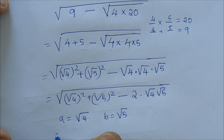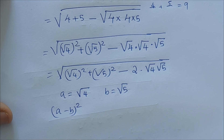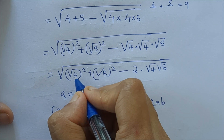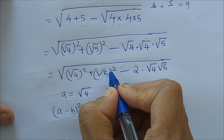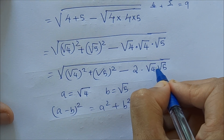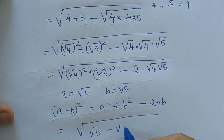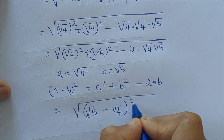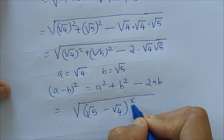This is in the form (a minus b) all squared, which equals a squared plus b squared minus 2ab. Here root 4 is a and root 5 is b, so this is in the form (a minus b) all squared. We can rewrite this as root of (root 5 minus root 4) all squared. The square and the root cancel.